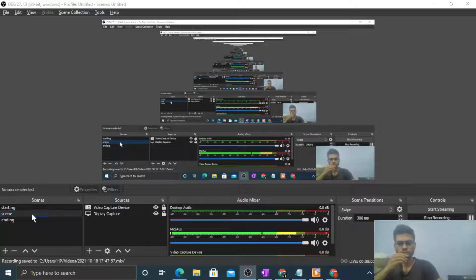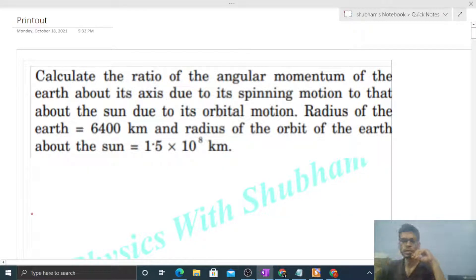Okay, hi everyone. So today let's discuss this interesting problem. It says calculate the ratio of the angular momentum of the Earth about its axis due to its spinning motion to that about the sun due to its orbital motion. Radius of the Earth is given and radius of the orbit of the Earth about the sun is also given.